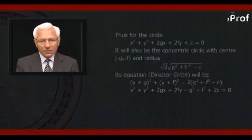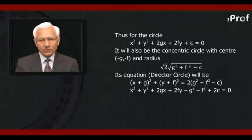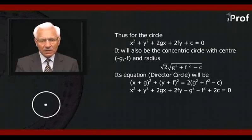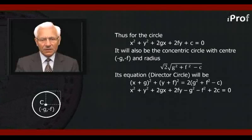Thus, for the circle x² + y² + 2gx + 2fy + c = 0, the directed circle will also be a concentric circle with center (-g, -f) and radius √2 · √(g² + f² - c).